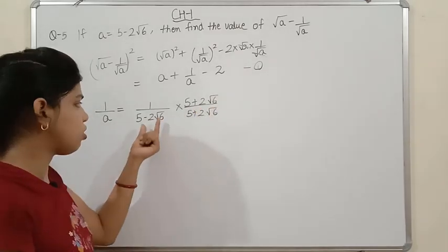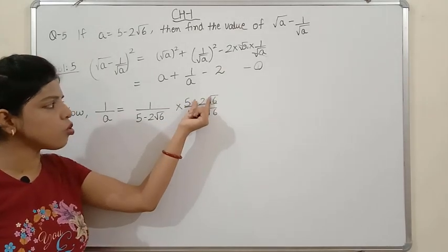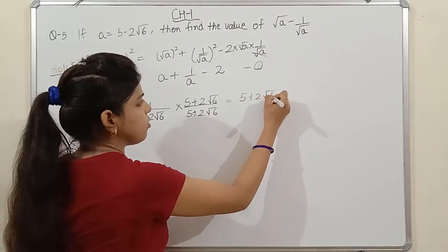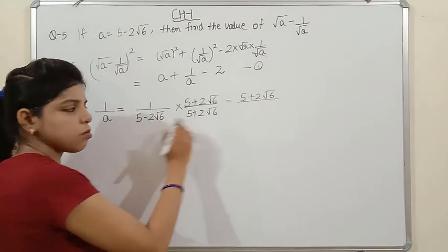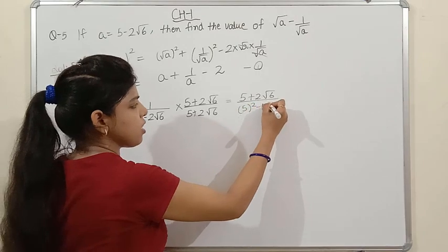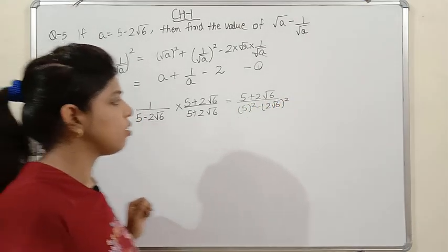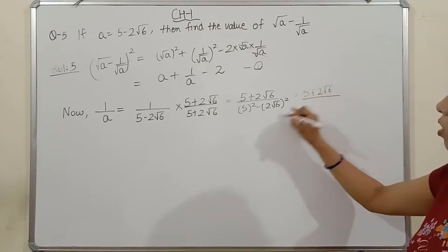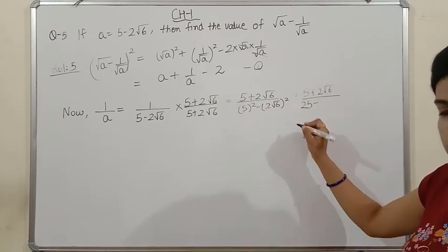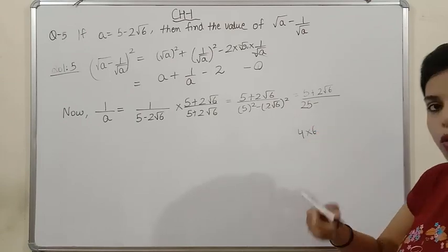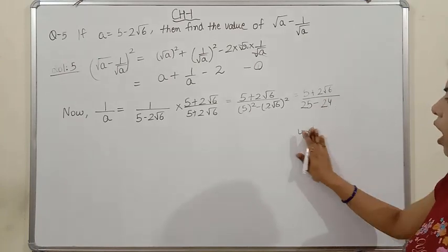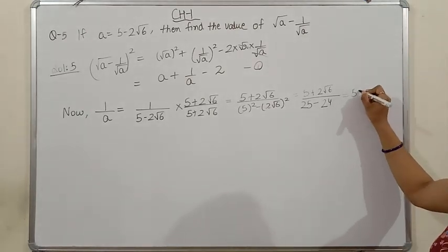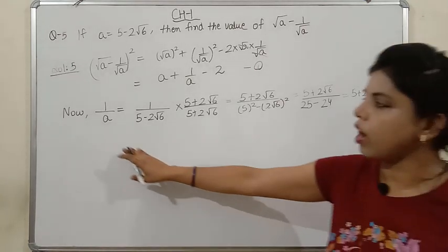So 1/a = (5 + 2√6)/((5)² - (2√6)²) = (5 + 2√6)/(25 - 4×6) = (5 + 2√6)/(25 - 24) = (5 + 2√6)/1 = 5 + 2√6.